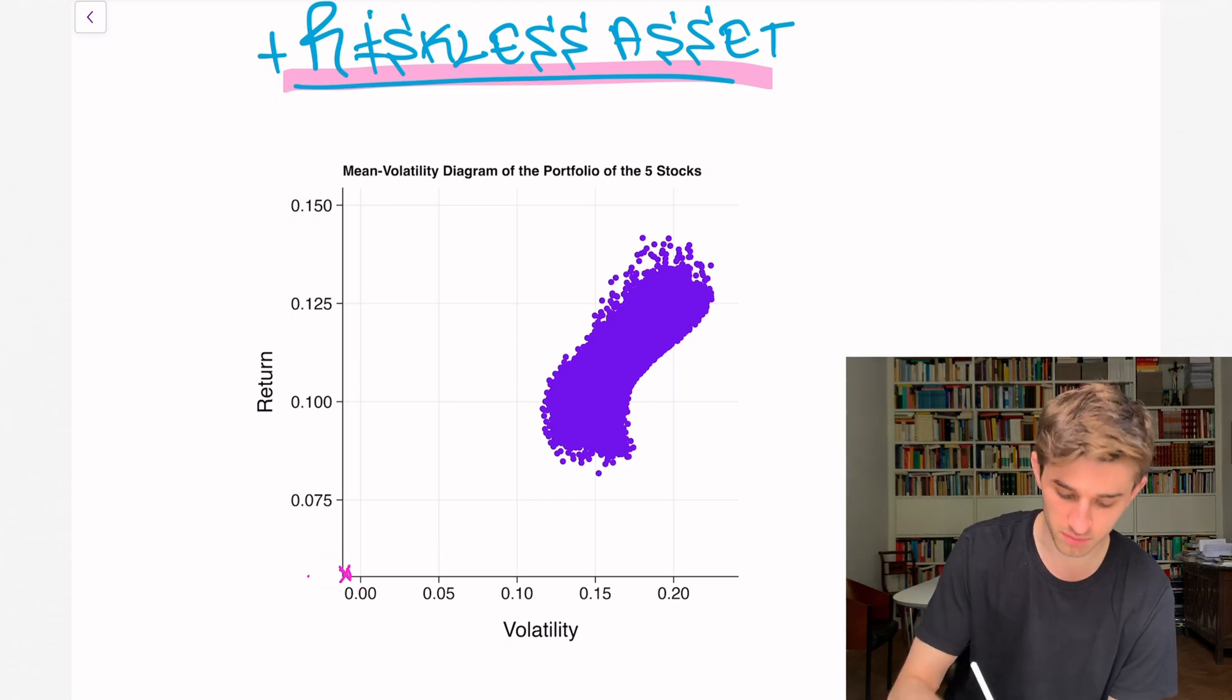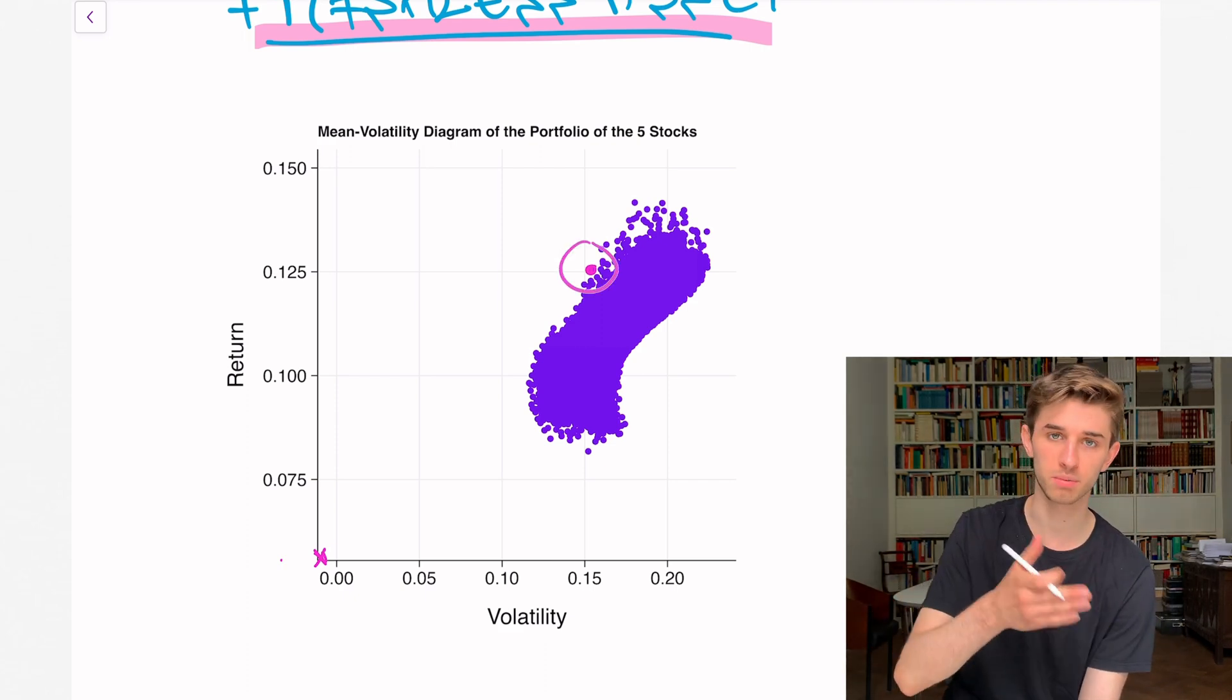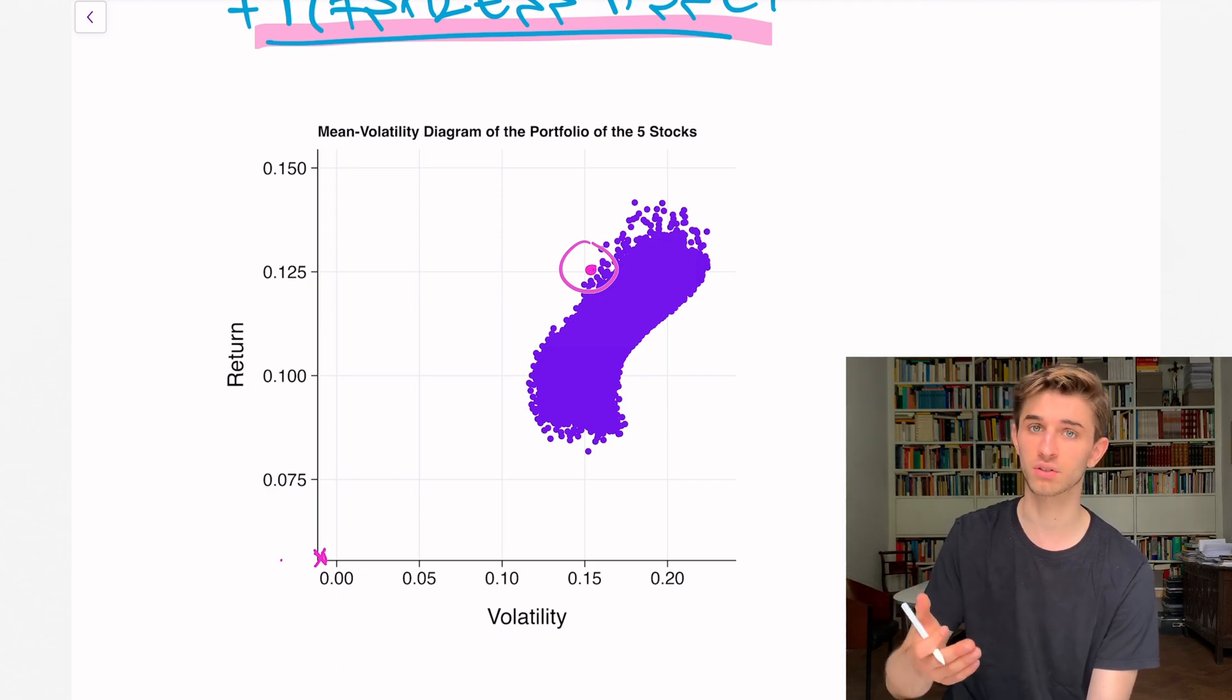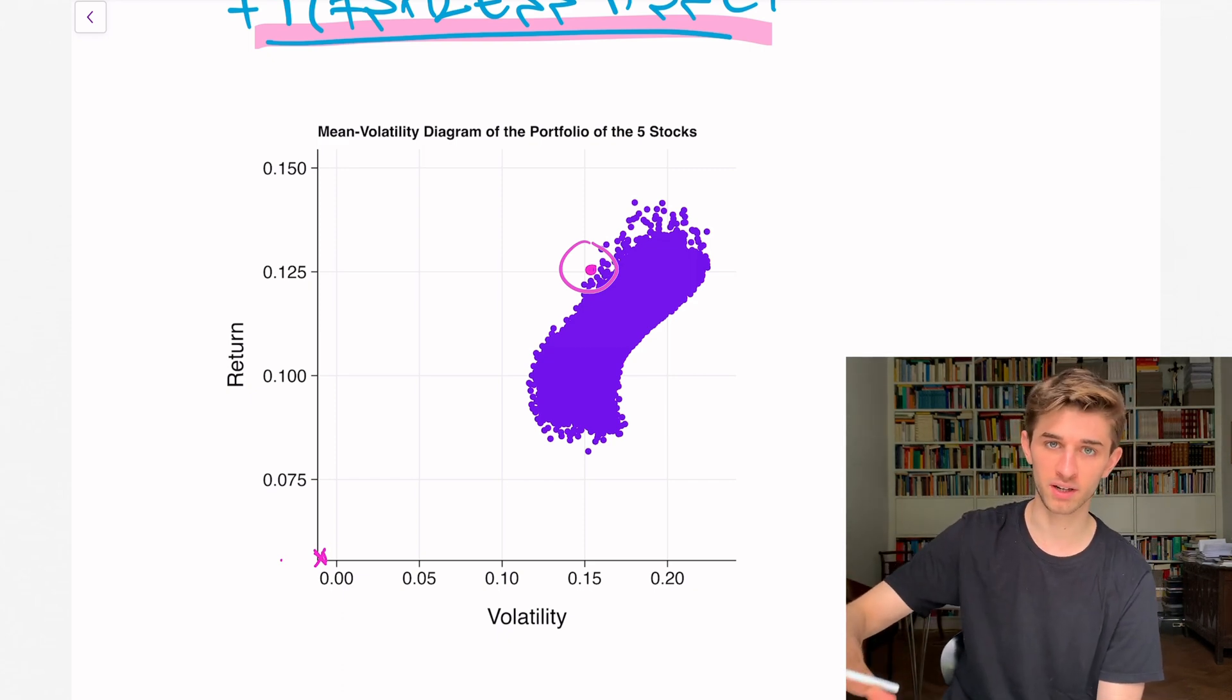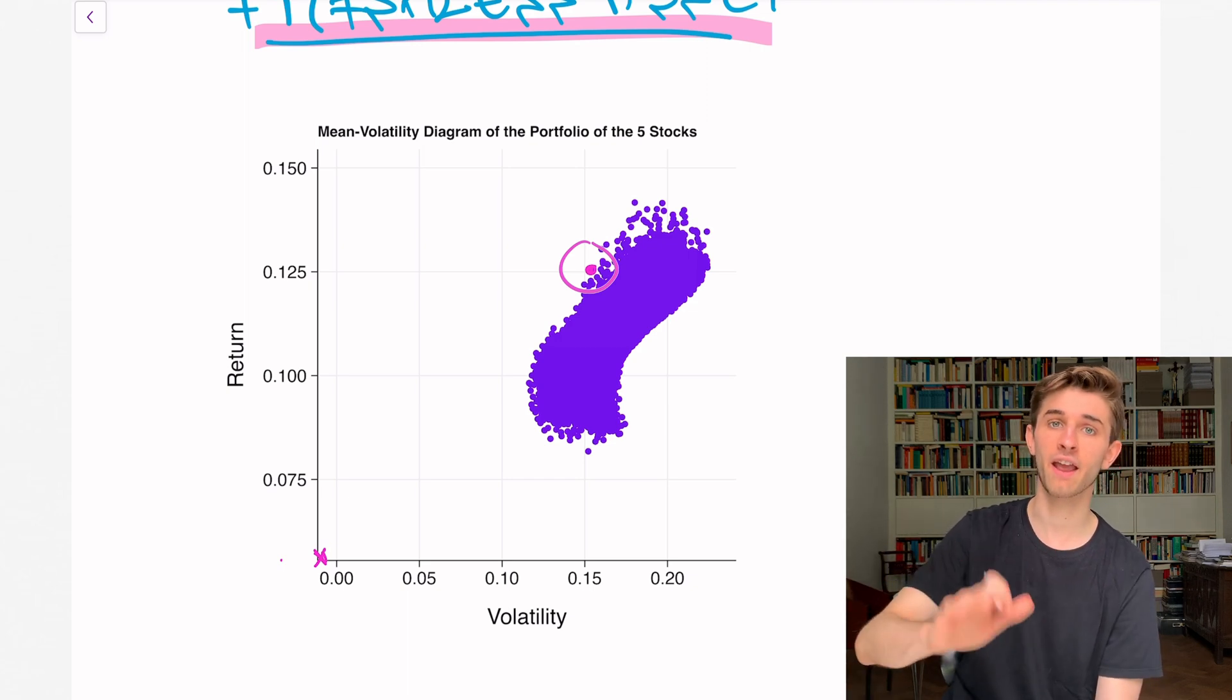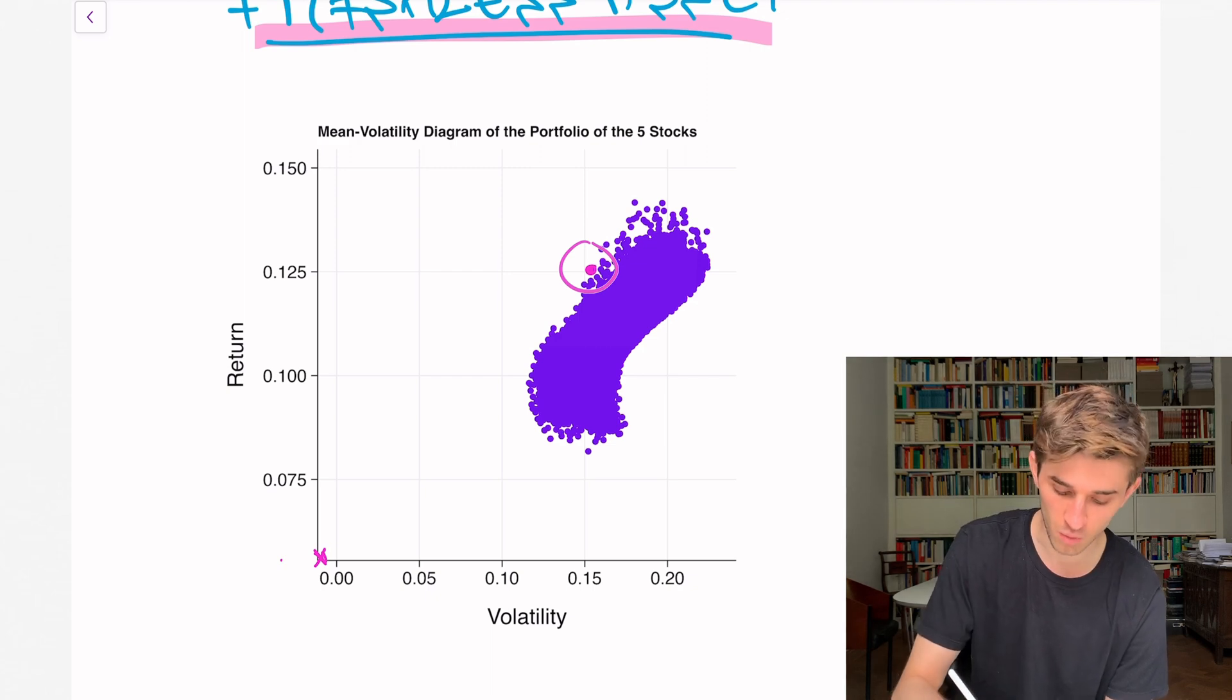Let's see what happens when we form portfolios between the stocks and the riskless bond. Let's say we choose this portfolio. This is another particular combination of the five assets. It could be 20% of stock one, 40% of stock two, and so on. We invest 50% of our money in that stock portfolio and 50% in the bond. What does that mean for our overall position?